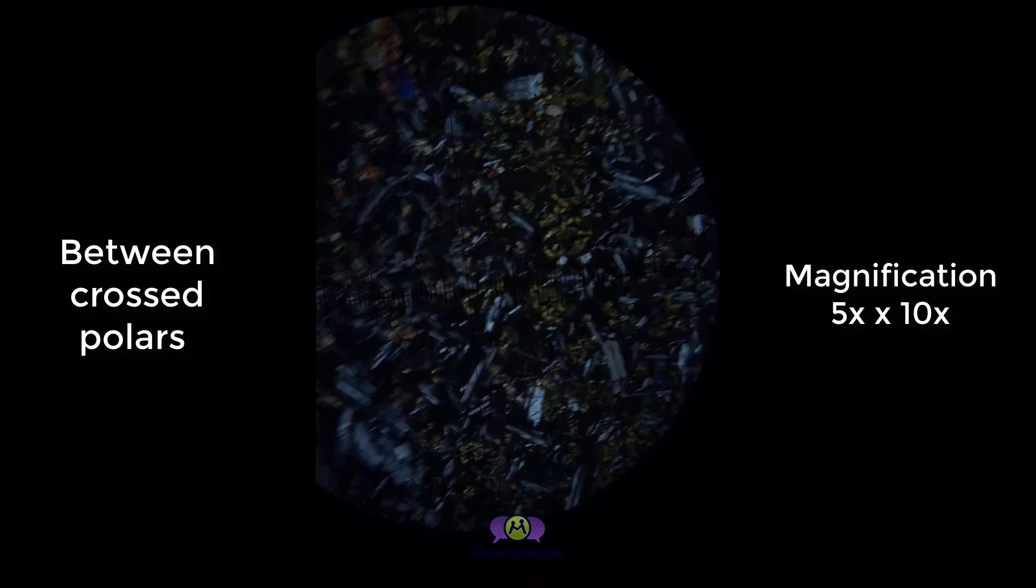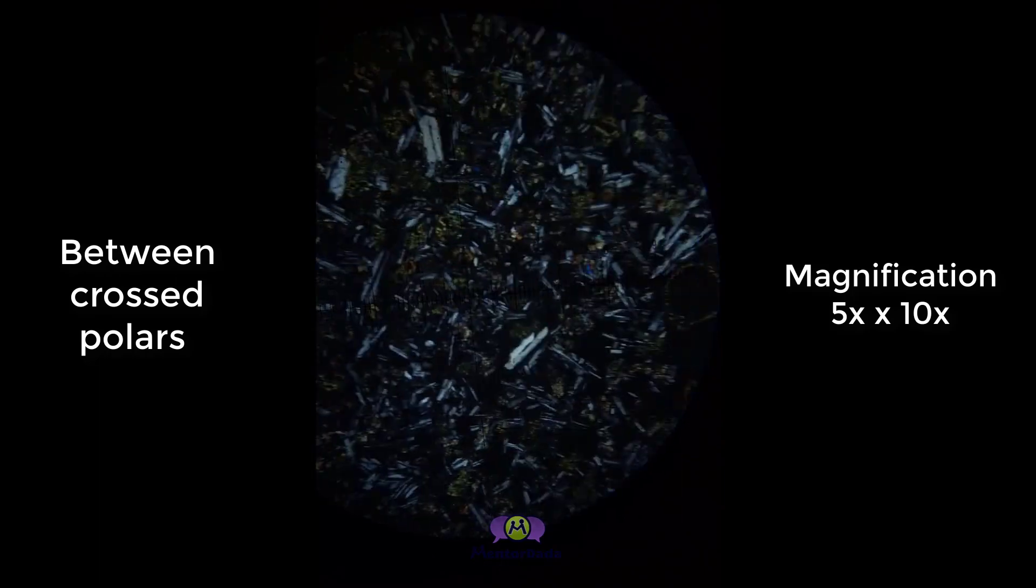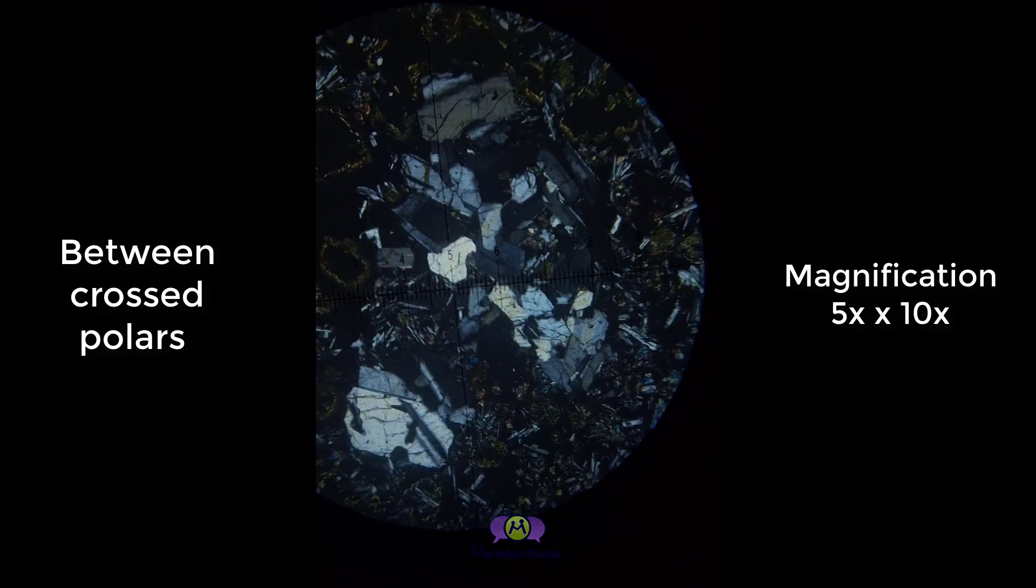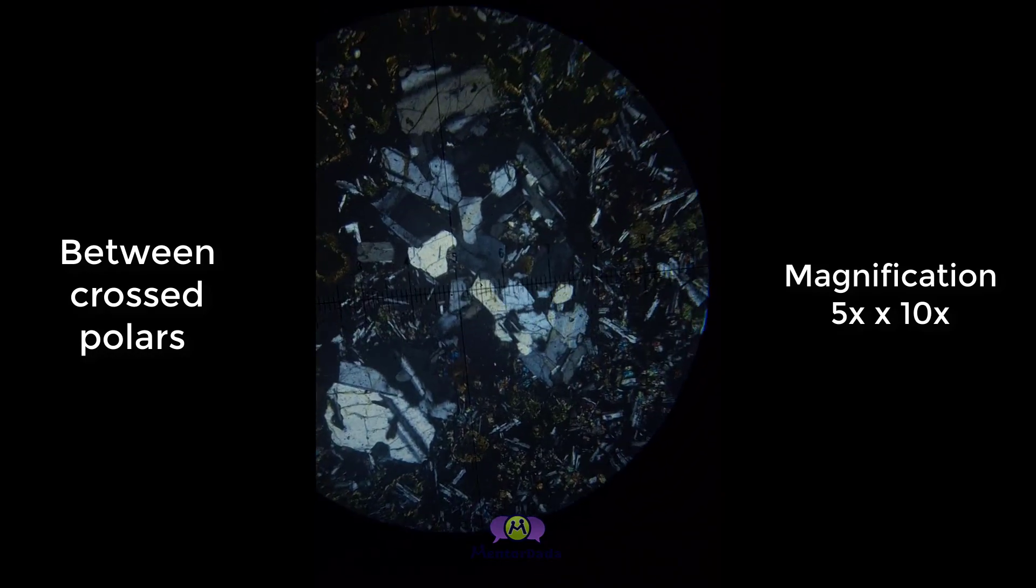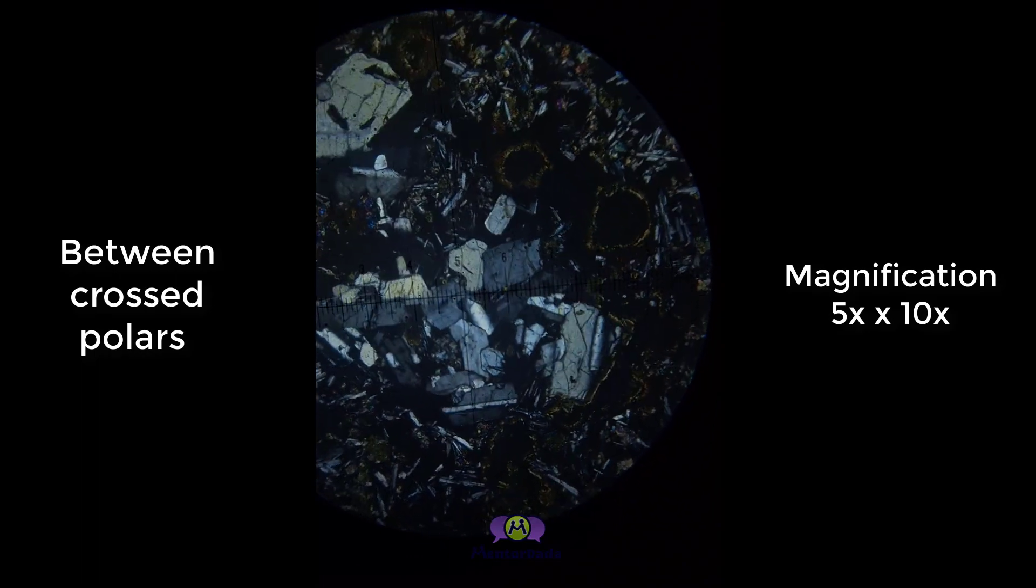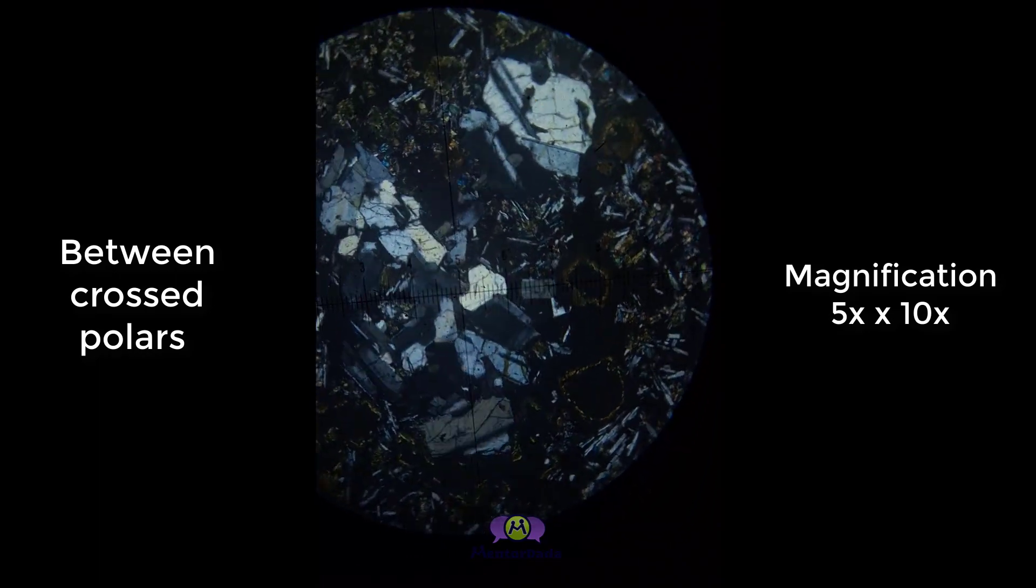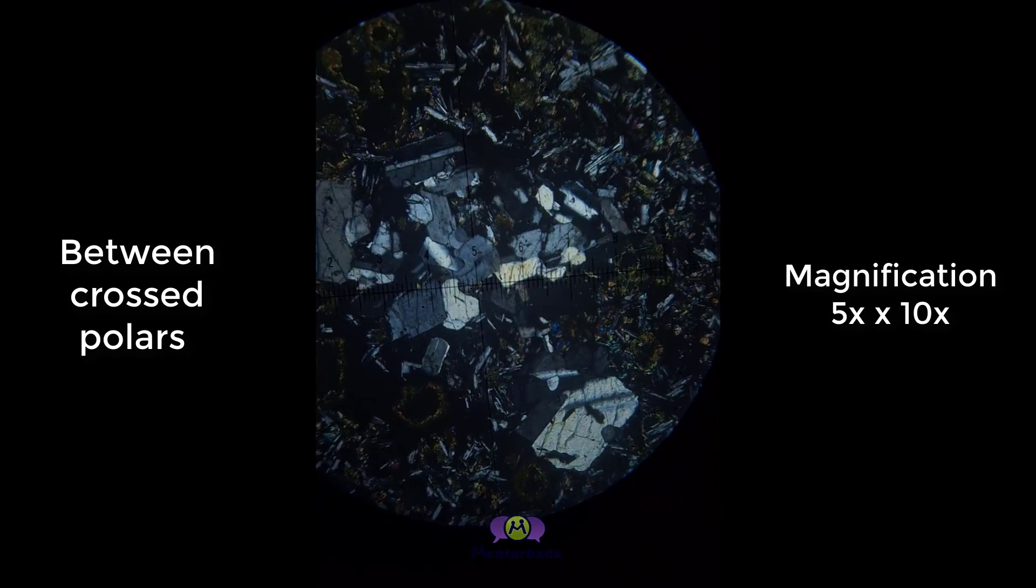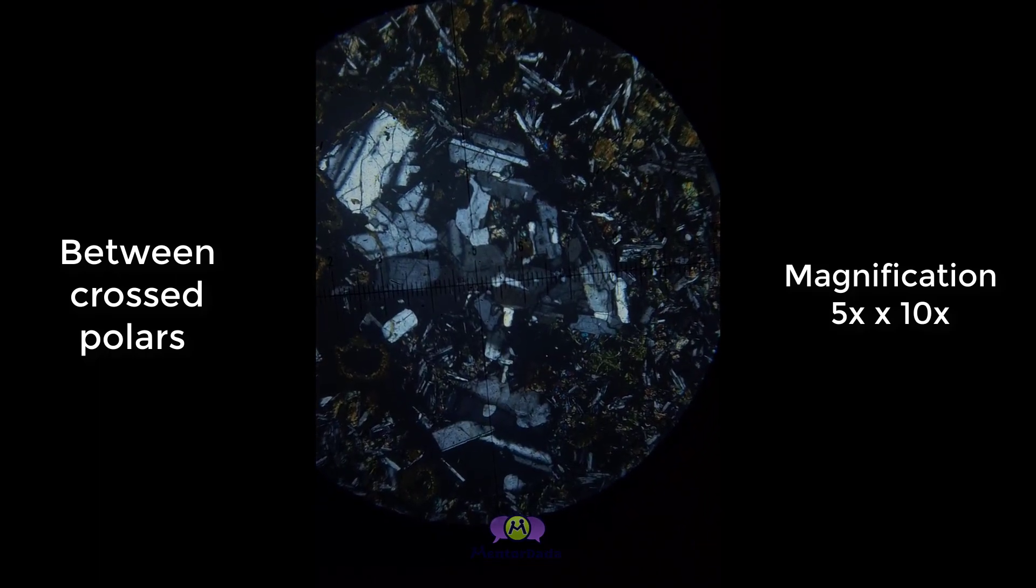At this area you are observing multiple phenocrysts of plagioclase clustering together, and we can call this texture a glomeroporphyritic texture.